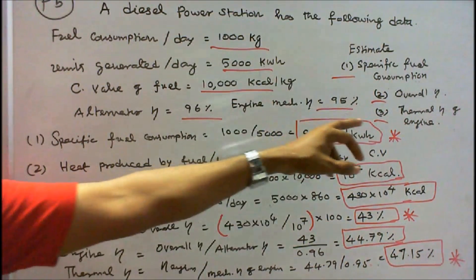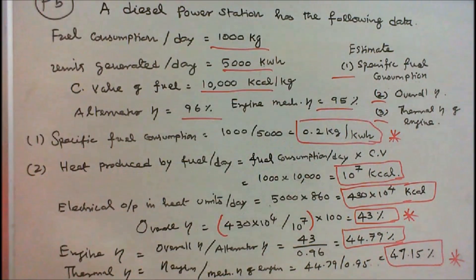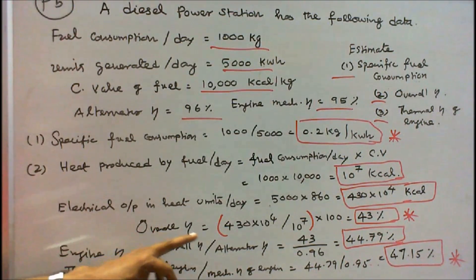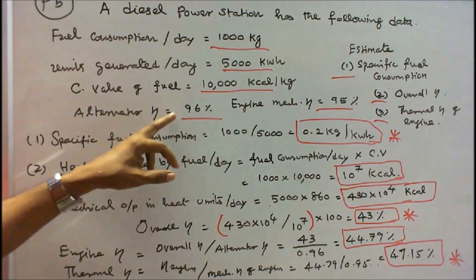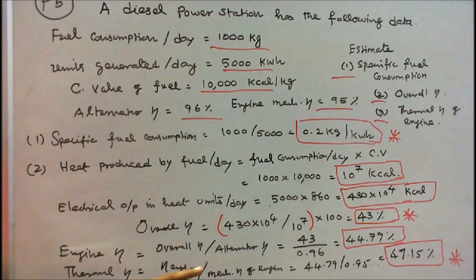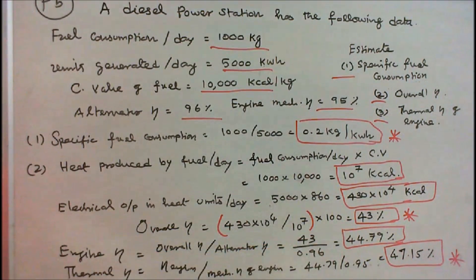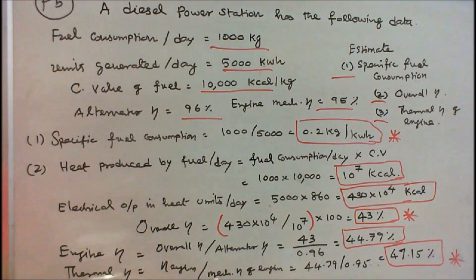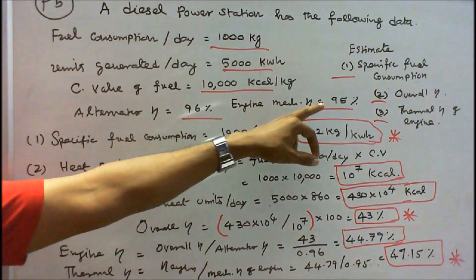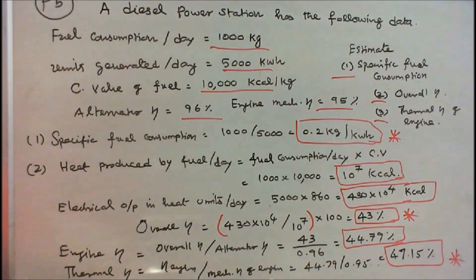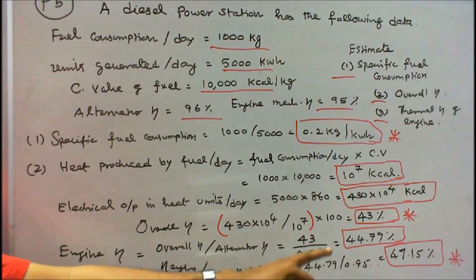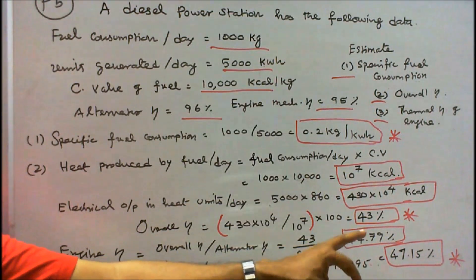Third: thermal efficiency of the engine. Engine efficiency = overall efficiency ÷ alternator efficiency = 43 ÷ 0.96 = 44.79%. Thermal efficiency of engine = engine efficiency ÷ mechanical efficiency of engine = 44.79 ÷ 0.95 = 47.15%.